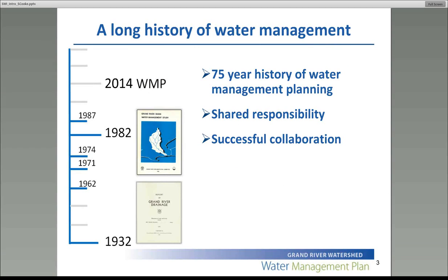We have a long history of water management, dating back over 80 years now. We've always had a plan to manage water on a watershed basis, dating back to 1932. The last formal plan was in 1982, and in 2009 we undertook an update to that plan. It's culminating now in a wide variety of outcomes and integrated actions that I'll just highlight briefly.